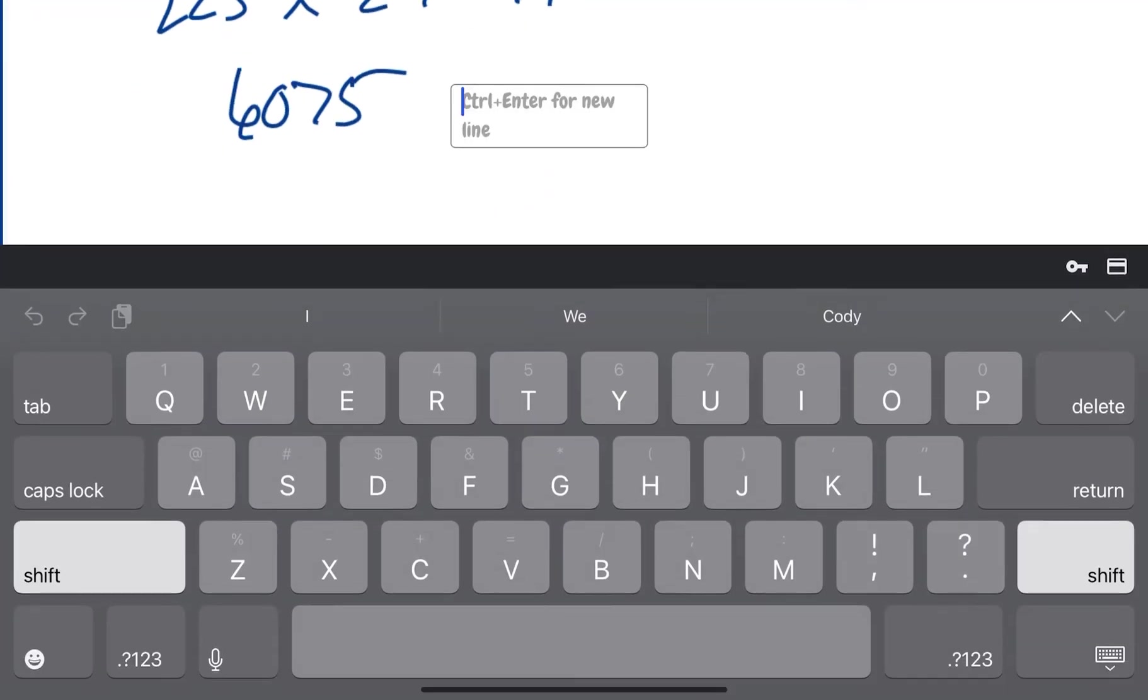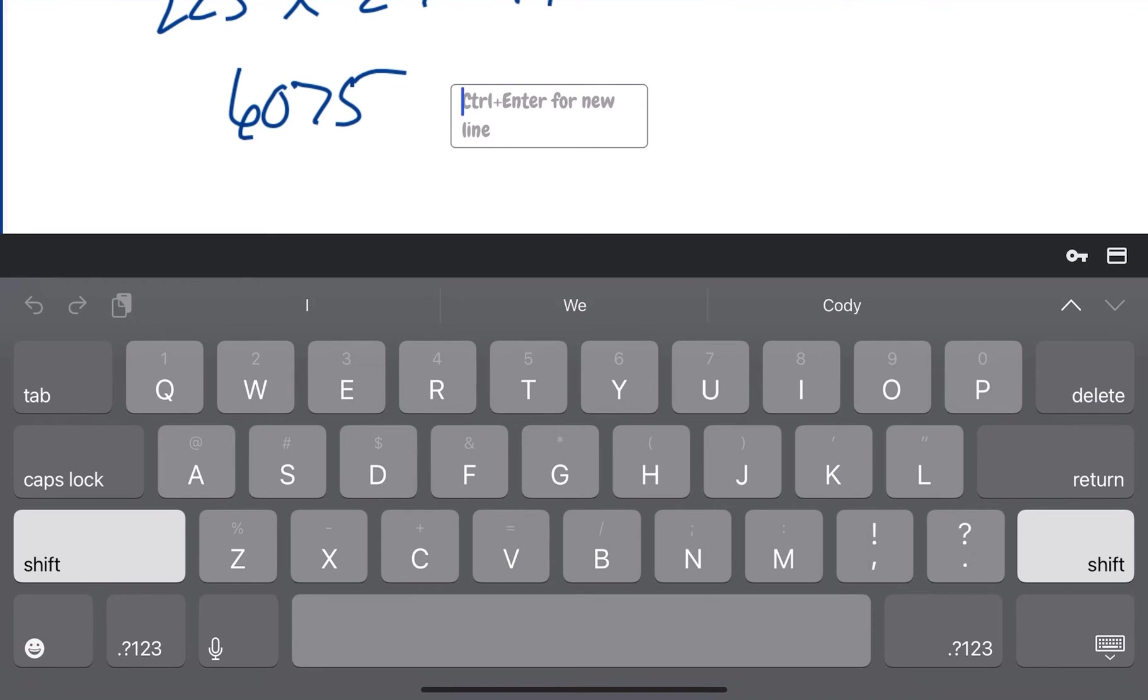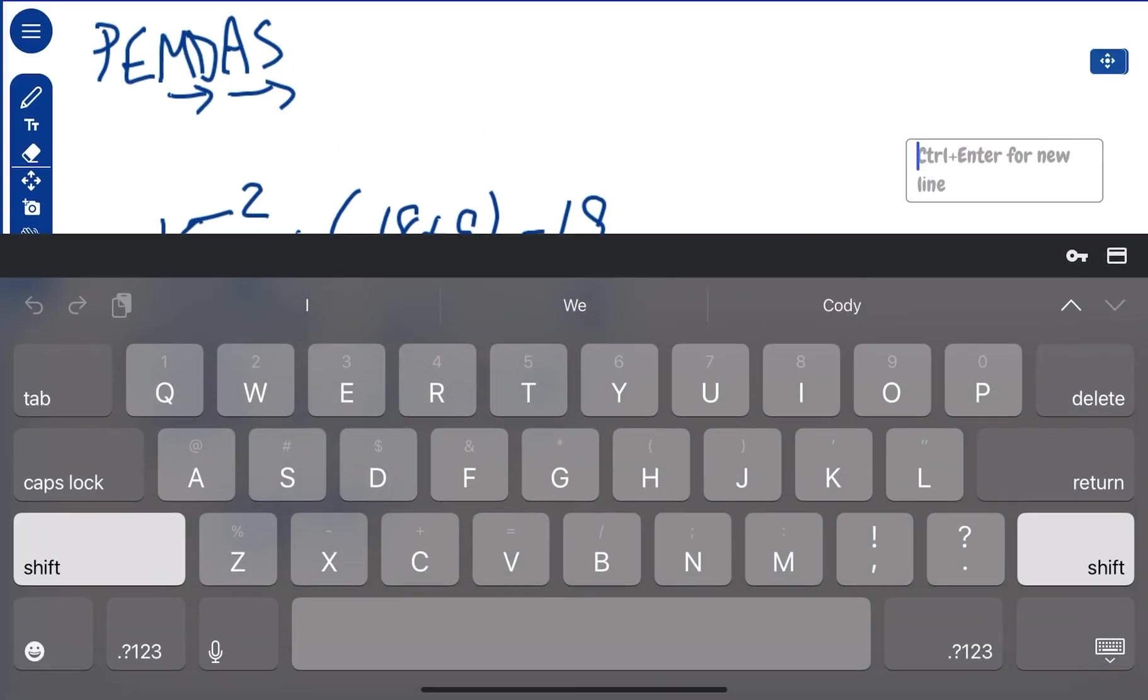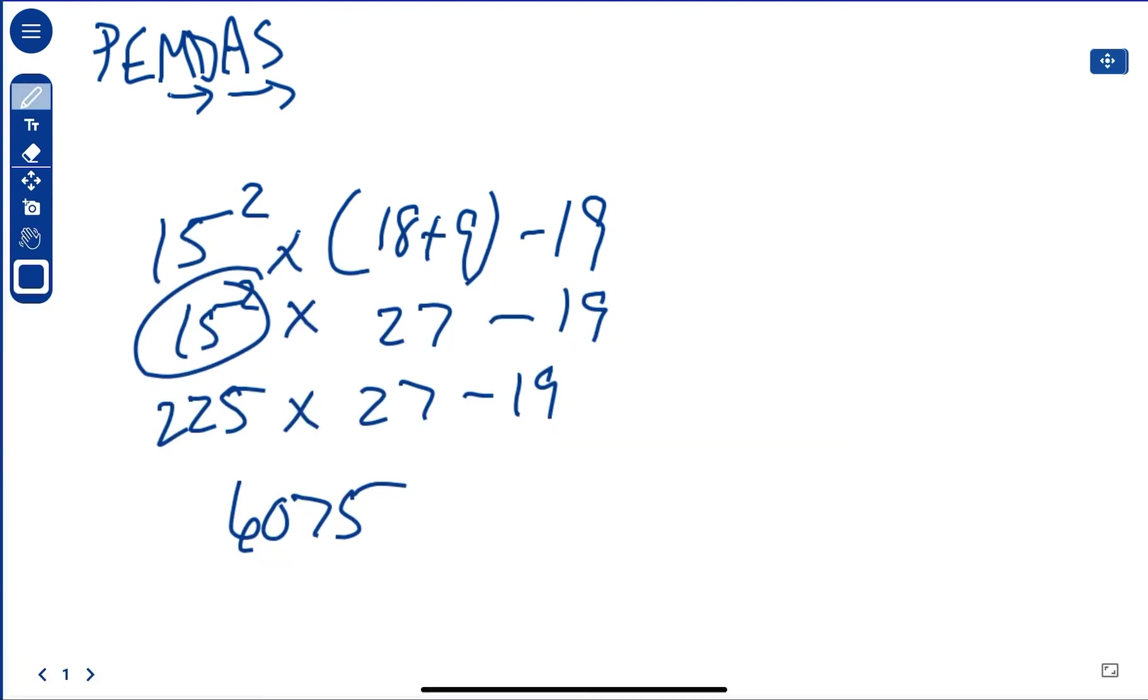And then minus, whoops, did not want to do that. Go away. Okay, minus 19. So if we subtract 19 from 6,075, we get 6,056.